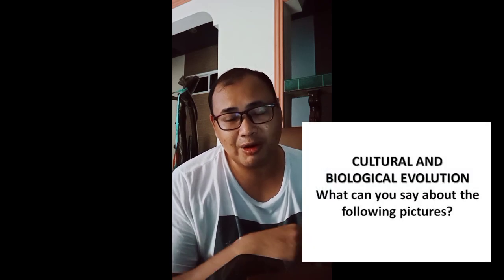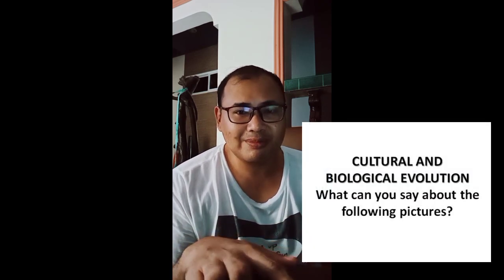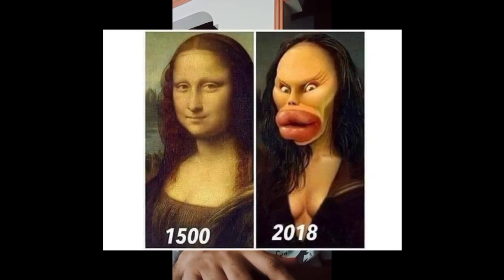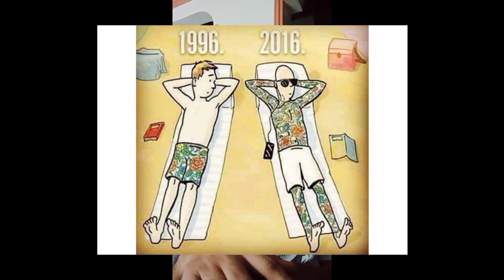Before we start, let me show you some pictures. What can you say about these pictures in connection to cultural and biological evolution? The first one — you can see the 1500s compared to 2018. Then we have 1996 tattoo designs compared to 2016 — in 1996 there weren't many tattoos, and the designs that used to be on shorts have now moved onto people's bodies.